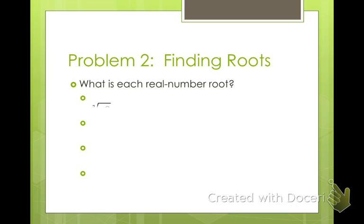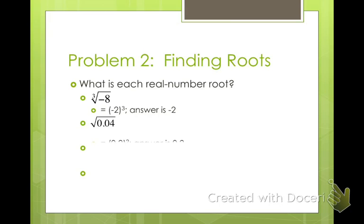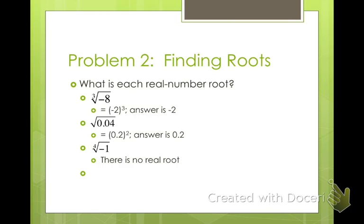What is each real root? The cube root of negative 8 — what times itself 3 times makes negative 8? Negative 2 cubed is negative 8, so the answer is negative 2. The square root of 0.04 — what number times itself 2 times makes 0.04? That's 0.2. The fourth root of negative 1 — what number times itself 4 times makes negative 1? There is no real root. And the square root of negative 2 squared — that's the square root of 4, which is 2, and also negative 2.